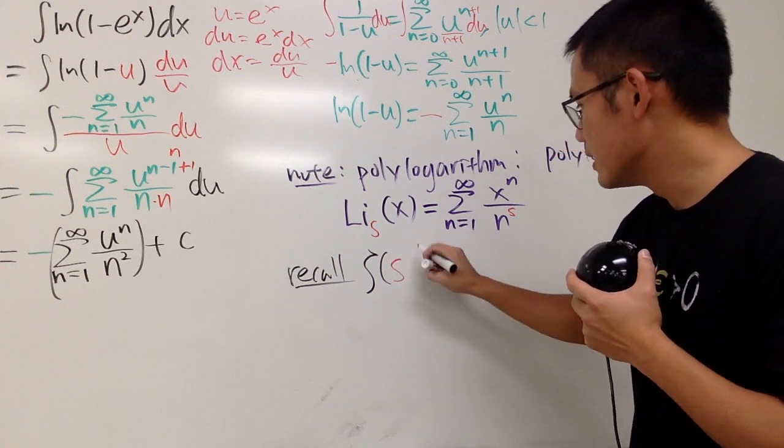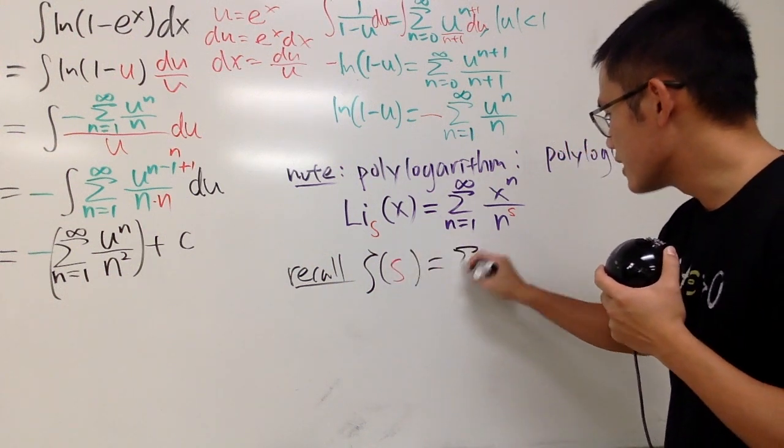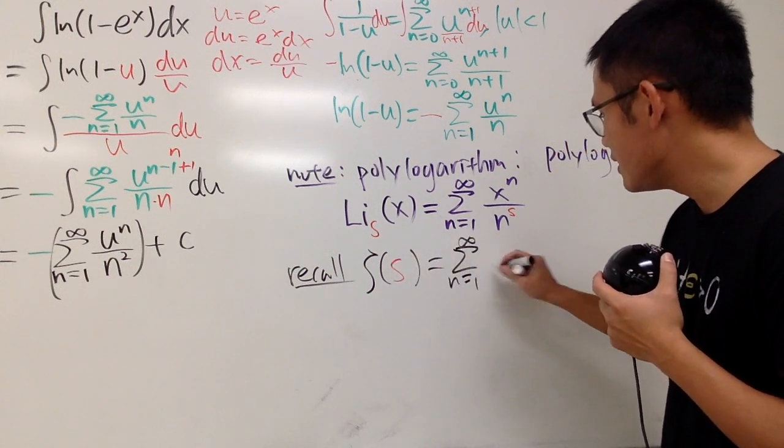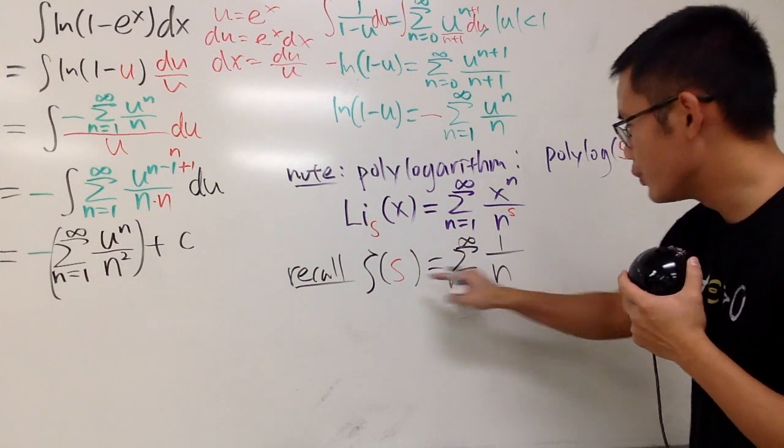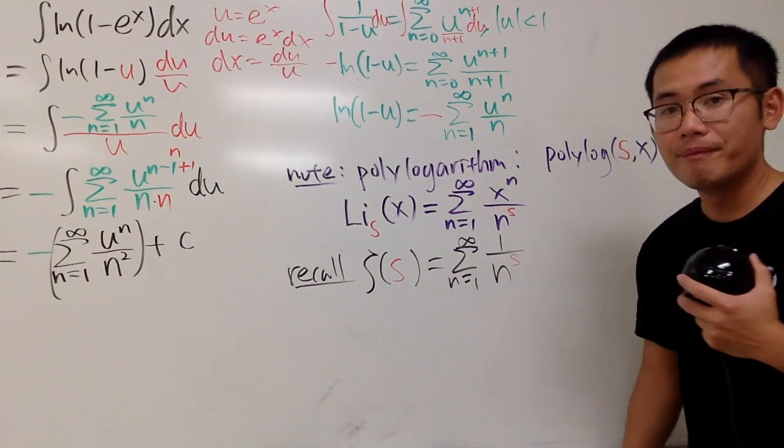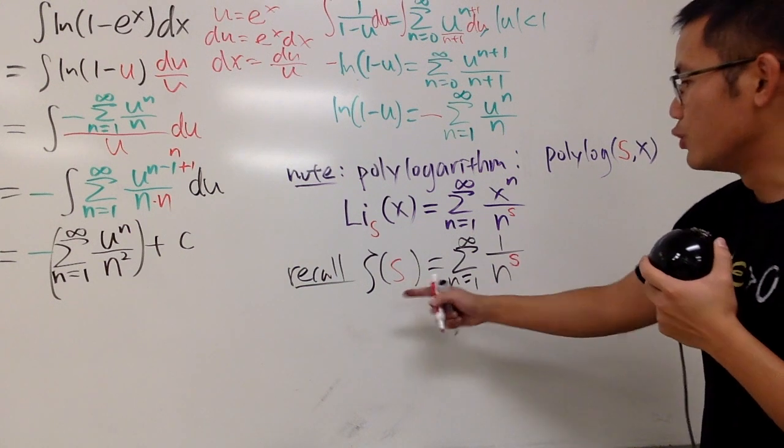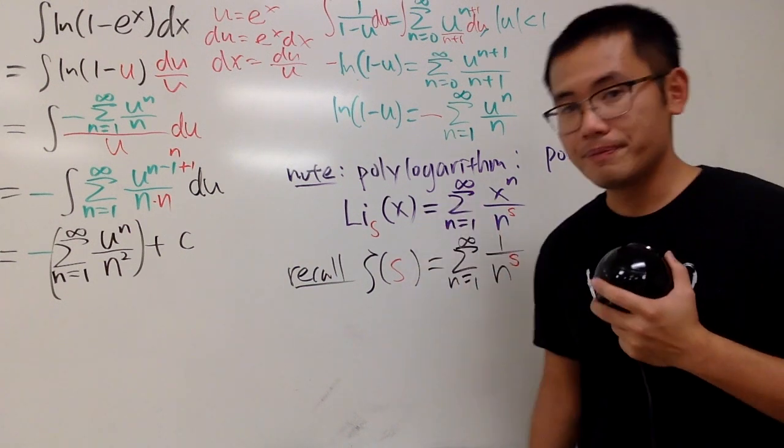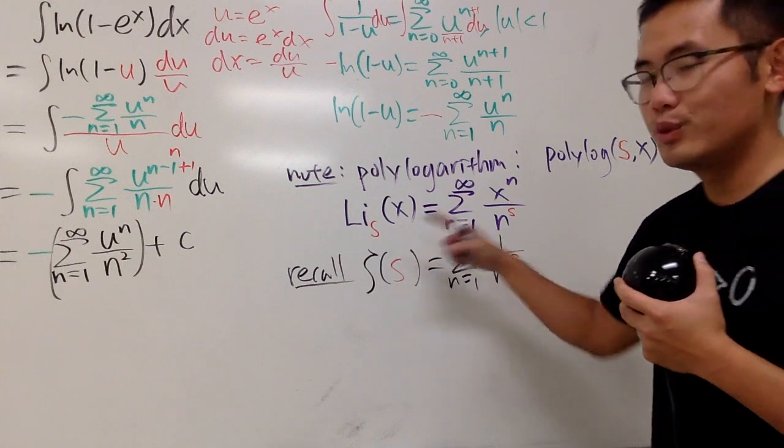Anyway, Riemann zeta function says, this right here, if the input is s, this is equal to the sum as n goes from 1 to infinity, 1 over n to the s power. So, what's the connection between the Riemann zeta function and then the polylogarithm?